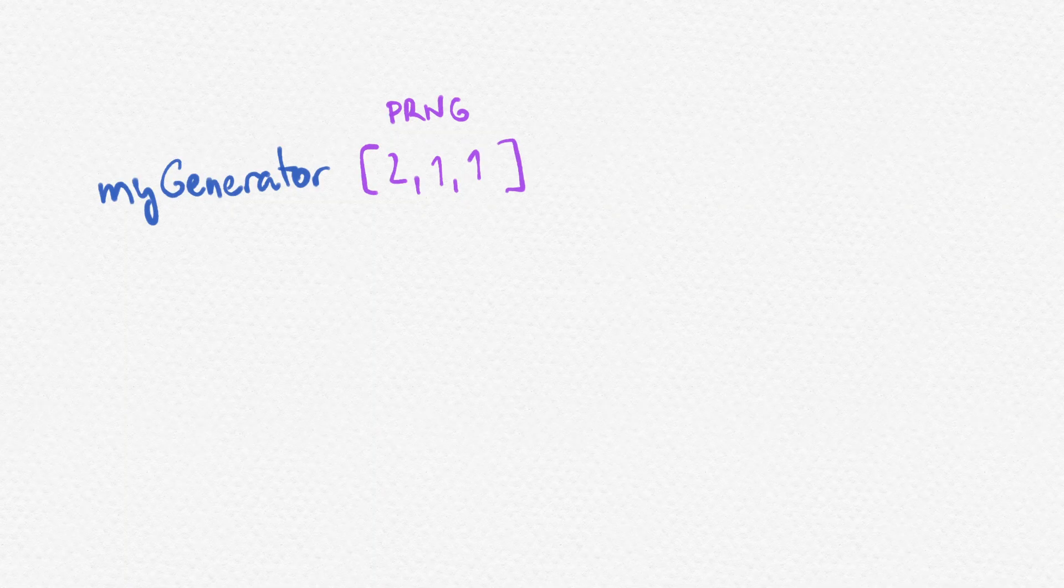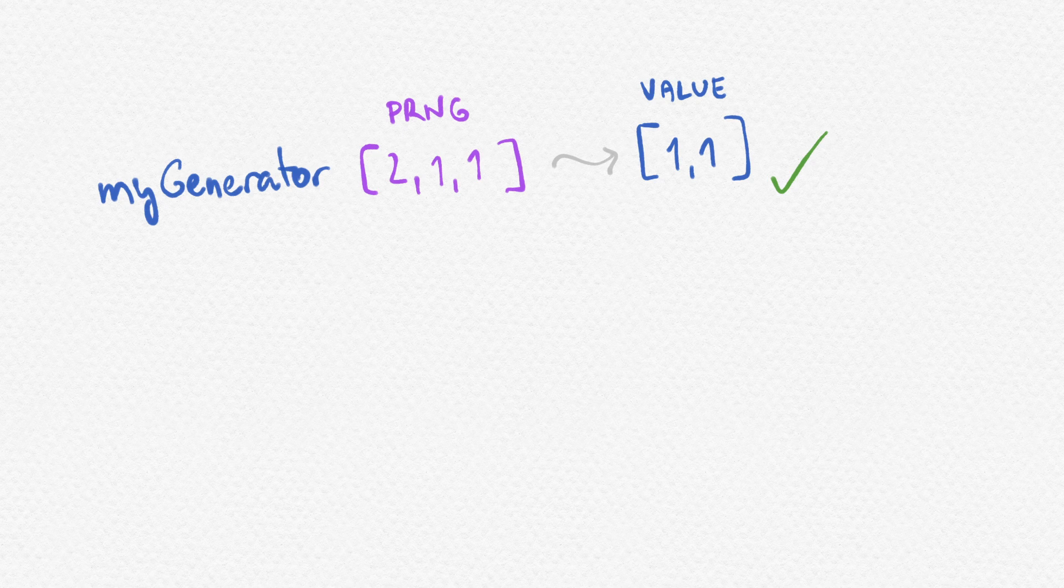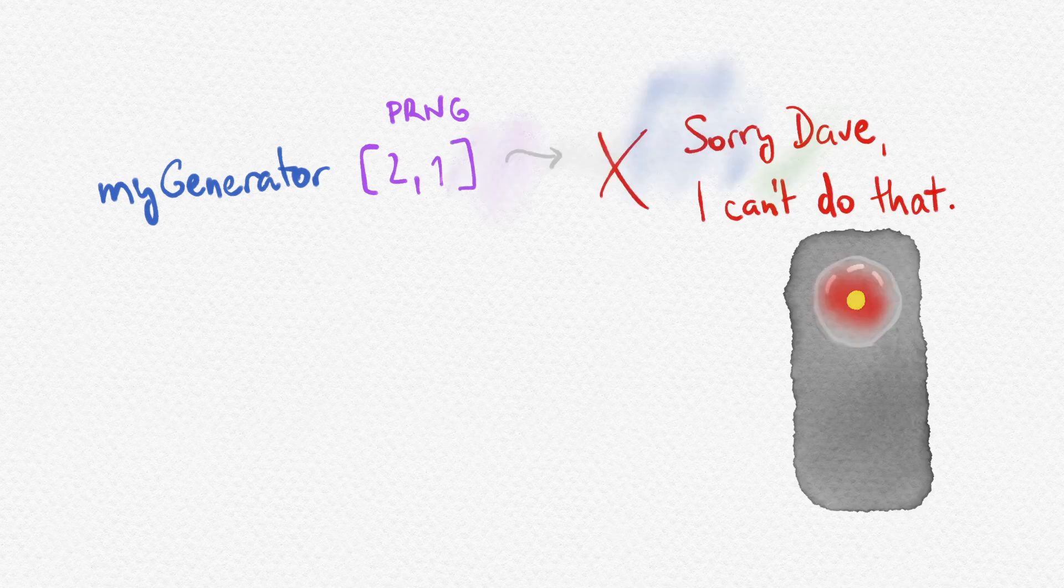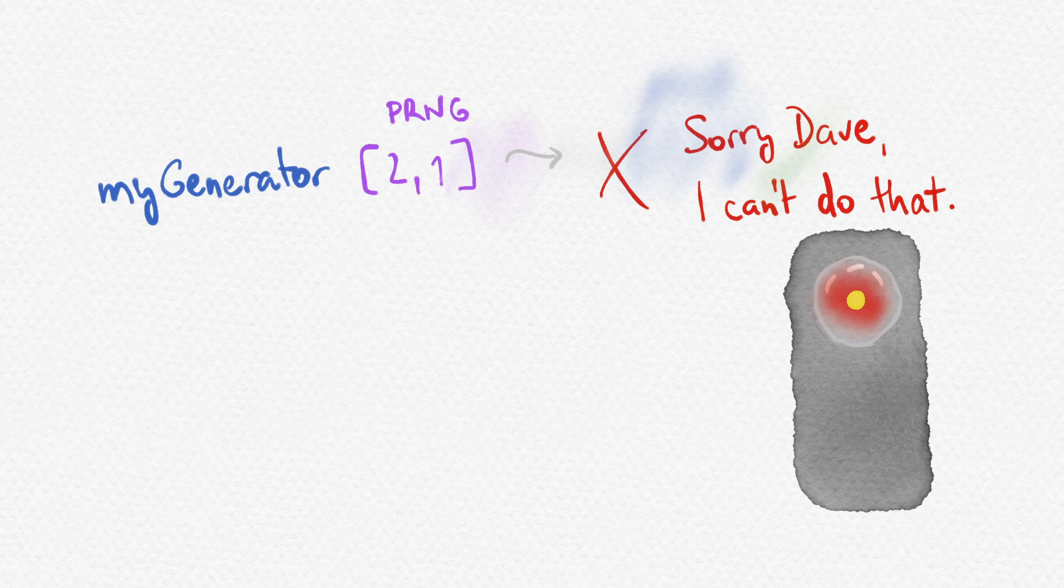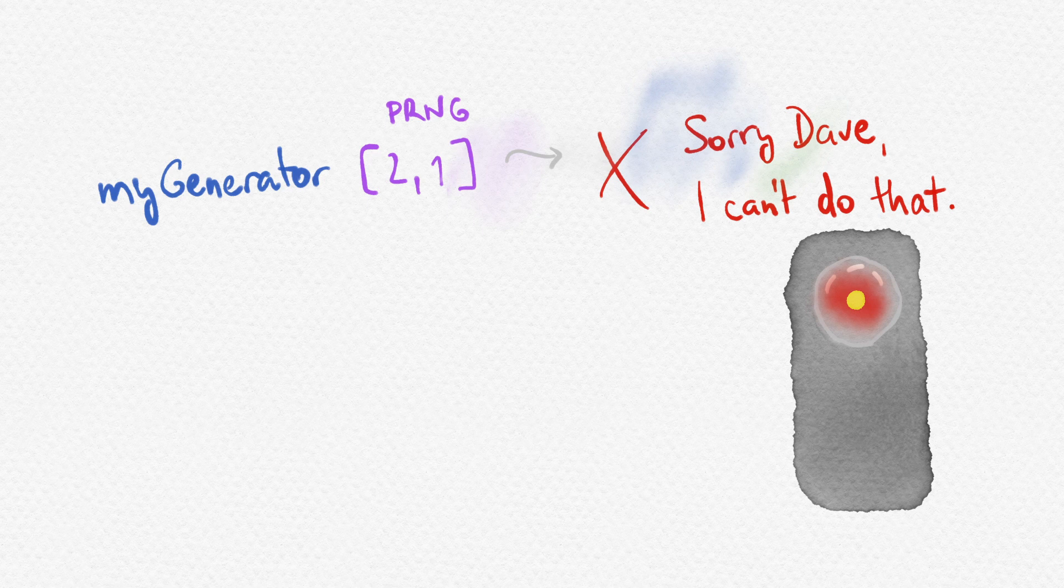For example, 2, 1, 1 might be an okay PRNG history for the first generator, but 2, 1 will not work, since the generator will try to draw 3 random values while it only has 2 available. So it will run out.